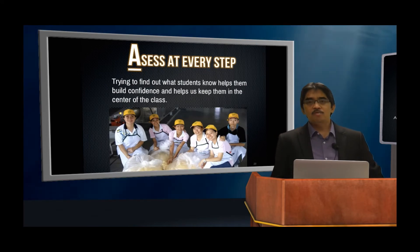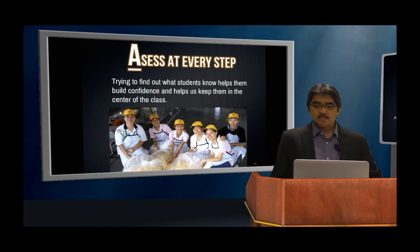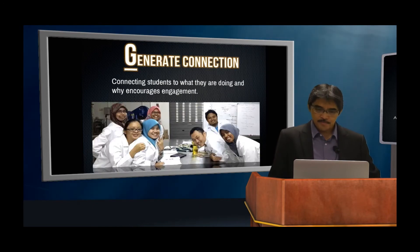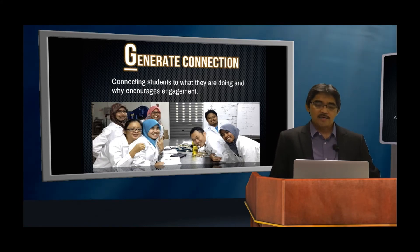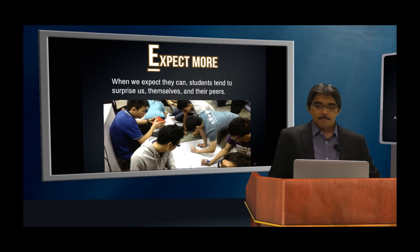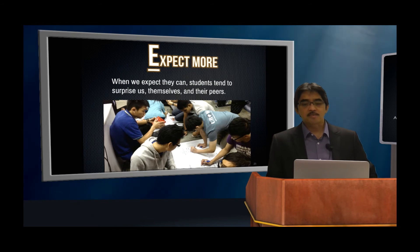The fourth approach is to include assessment — we assess every step in the activity conducted in the classroom. This means finding out what students know, helping them build confidence, and keeping them at the center of the class. The fifth is to generate connection: connecting students to what they are doing and why encourages engagement. Always encourage students to expect more from classroom activities and from working together — when we expect they can, students tend to surprise themselves and their peers.